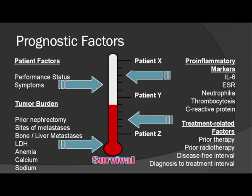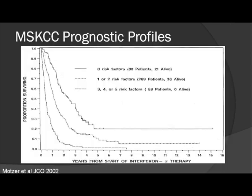The diagnosis-to-treatment interval is similar to disease-free interval. As voted on in the room, the Memorial Sloan-Kettering Cancer Center Prognostic Profile is a very commonly used system. It uses calcium, LDH, hemoglobin, time-from-diagnosis-to-treatment, and Karnofski performance status as five prognostic factors, producing favorable, intermediate, and poor risk groups. This was developed in the immunotherapy era, so these median overall survivals reflect that era.